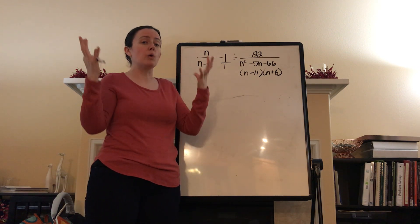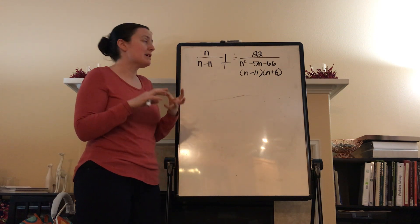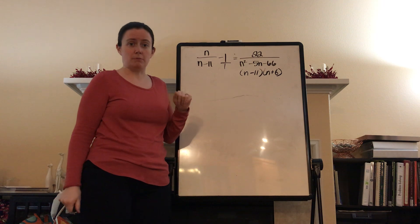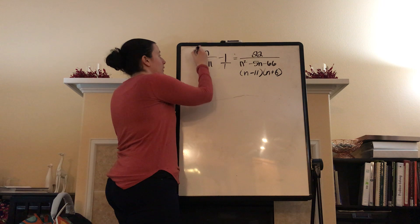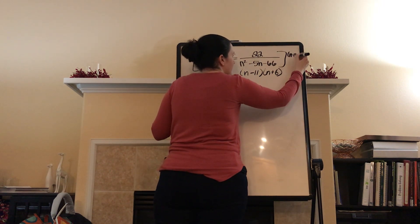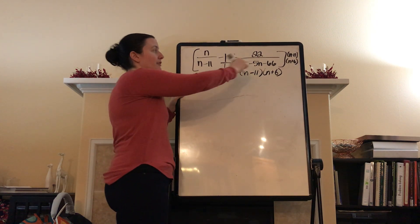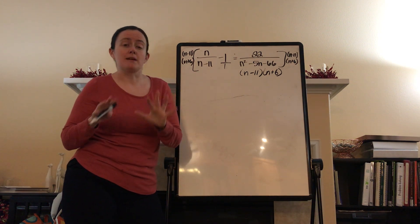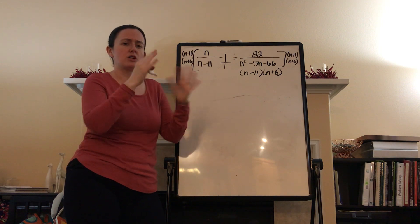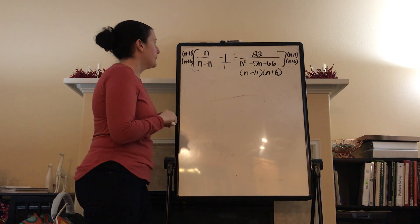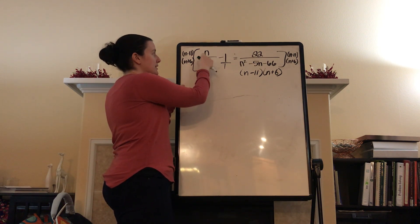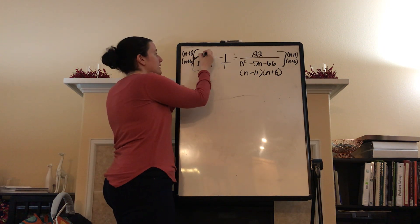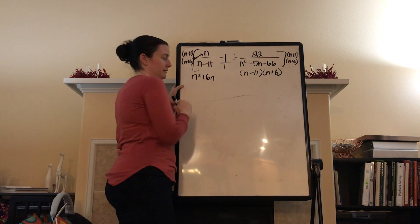So what we're going to do now is multiply this whole equation by (n minus 11) times (n plus 6) — meaning I'm going to multiply each term by (n minus 11)(n plus 6). I'm writing it twice just so we can see it on both sides of the equation and not panic about it. So for the very first term, when I multiply (n minus 11)(n plus 6) times n over (n minus 11), the (n minus 11)s cancel out, leaving me with n times (n plus 6), which is n squared plus 6n. Are you with me so far?